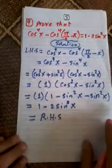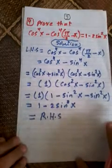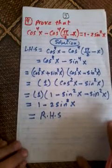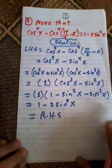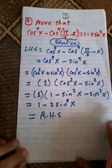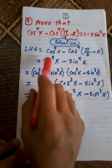Another example: prove that cosine to the power 4 of x minus cosine to the power 4 of (π/2 minus x) equals one minus two sine squared x.